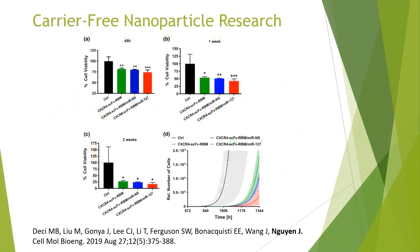The effect of different types of the nanoplex were tested on breast cancer cells. Each type of nanoplex was used for a set period of time on the cancer cells and the resulting percent cell viability was measured, with a lower cell viability indicating a more effective treatment. After only 48 hours, the cell viability of the cancer cells decreased significantly when treated with the nanoplexes.